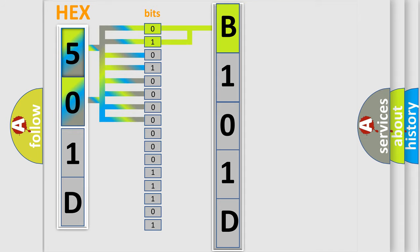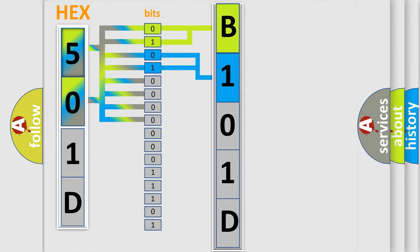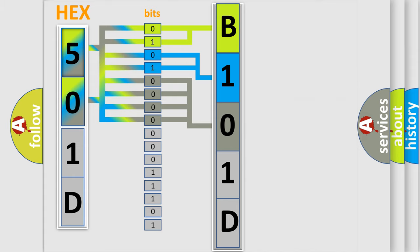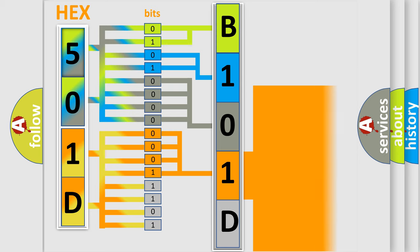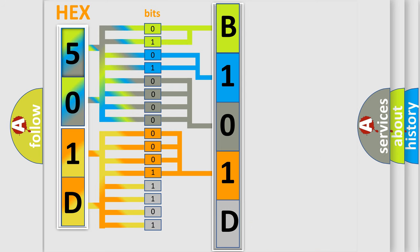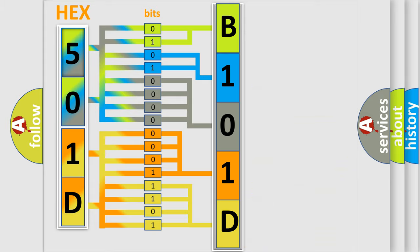The next two bits determine the second character. The last bits of the first byte define the third character of the code. The second byte is composed of a combination of eight bits. The first four bits determine the fourth character, and the last four bits define the fifth character. A single byte conceals 256 possible combinations.